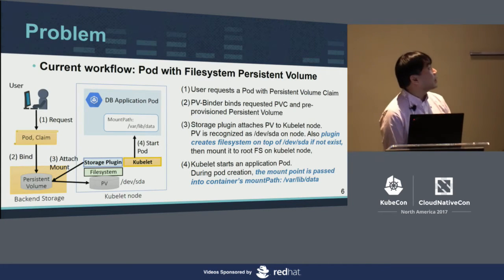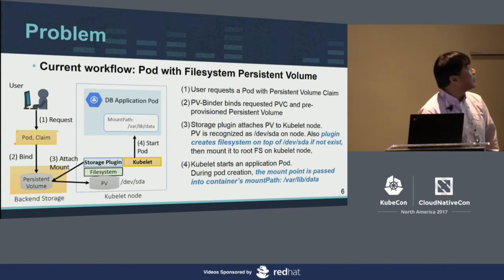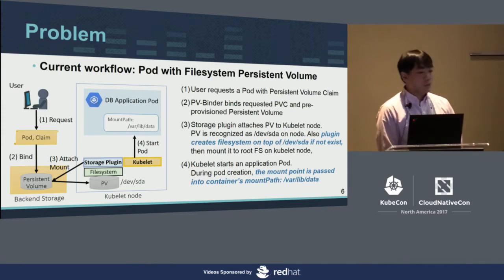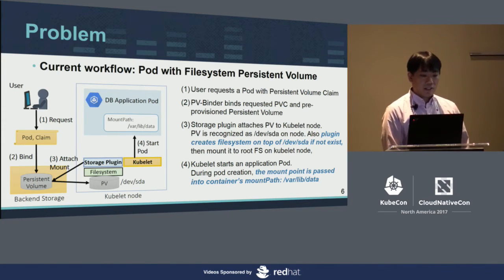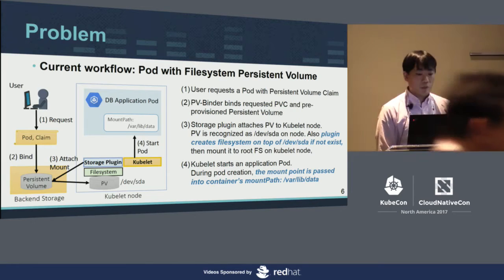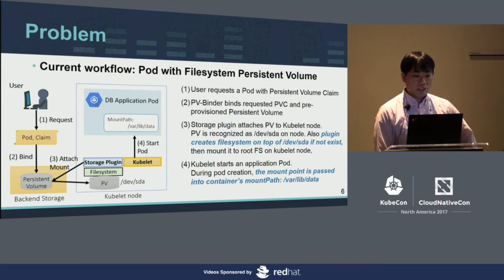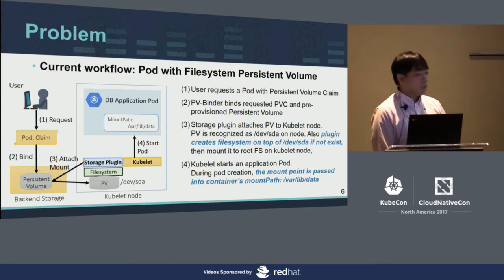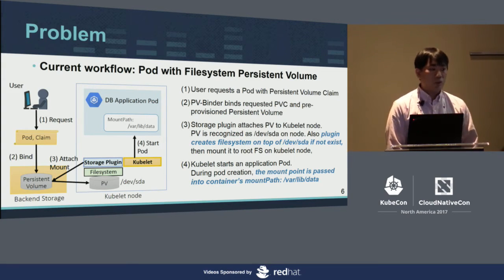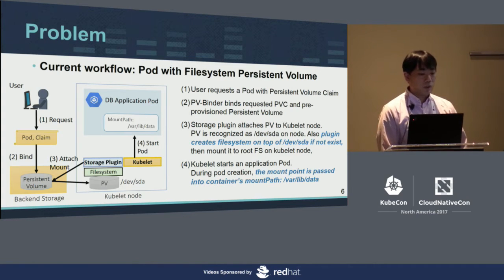Let me explain the current problem in more detail. This figure shows the current workflow to create a pod with a file system persistent volume. At step one, the user requests a pod with a persistent volume claim. At step two, the PV binder binds the requested PVC and a pre-provisioned persistent volume. At step three, the storage plugin attaches the PV to the Kubernetes node, where it is recognized as a block device. The plugin also creates a file system on top of /dev/sda if one doesn't exist.